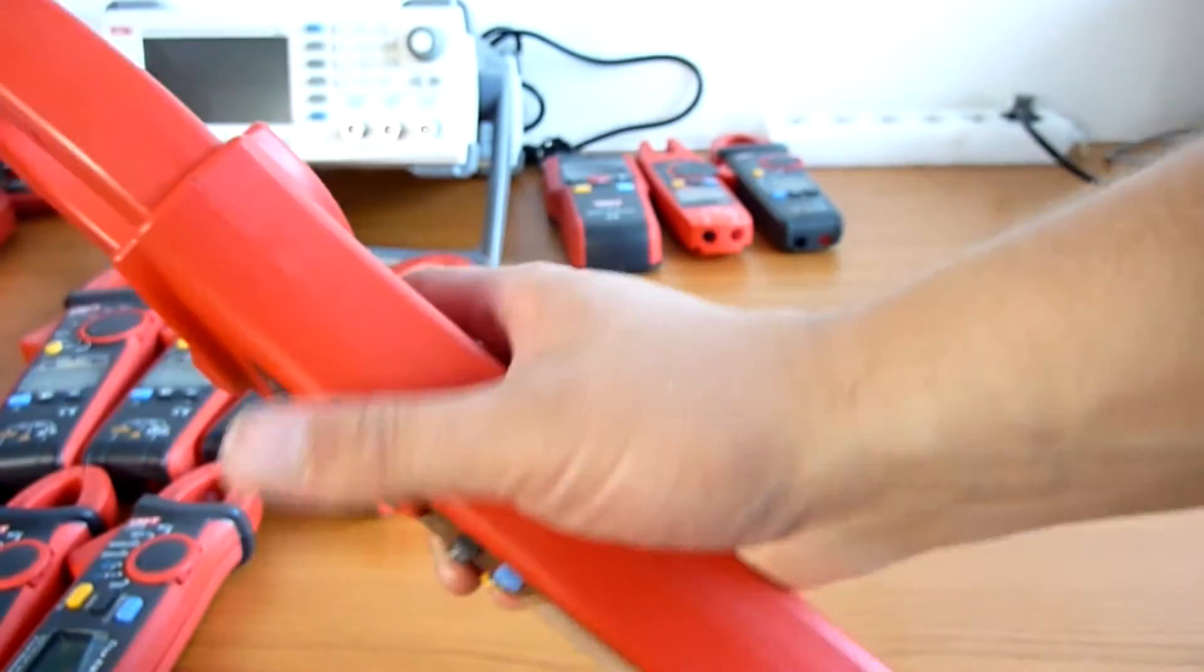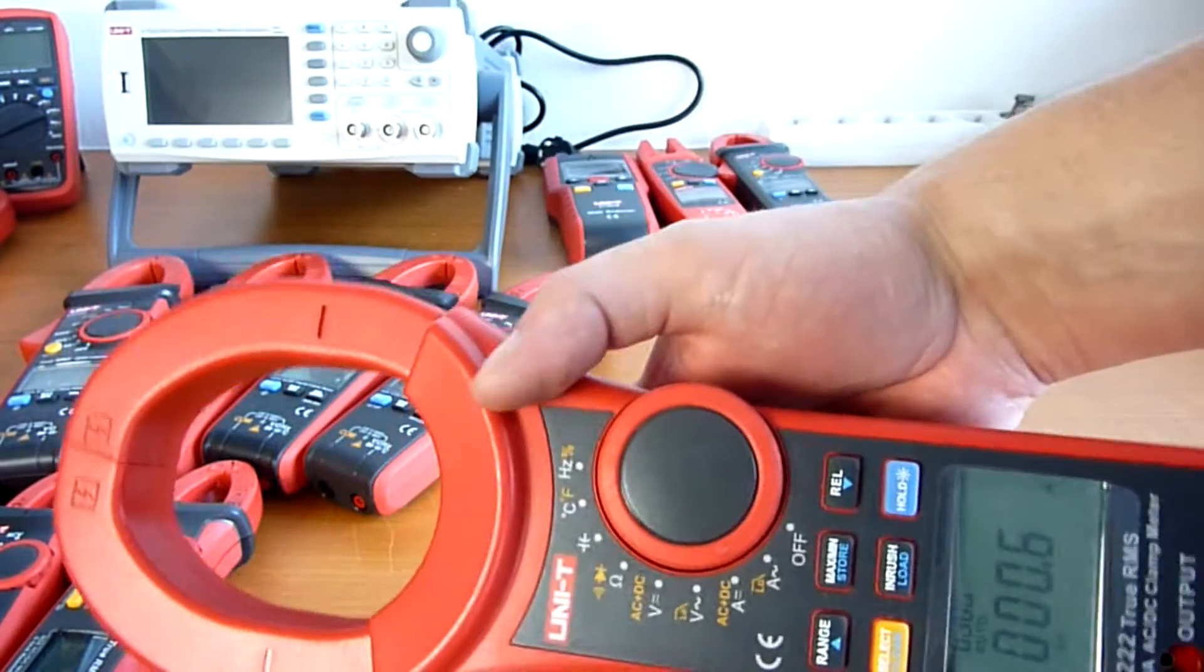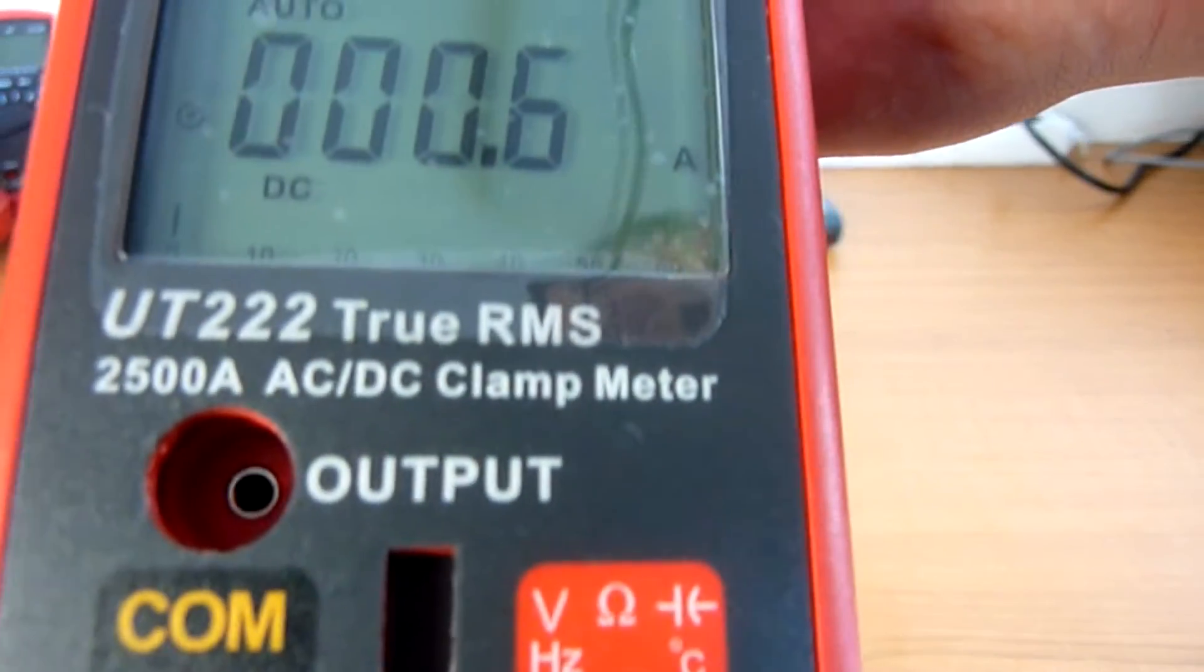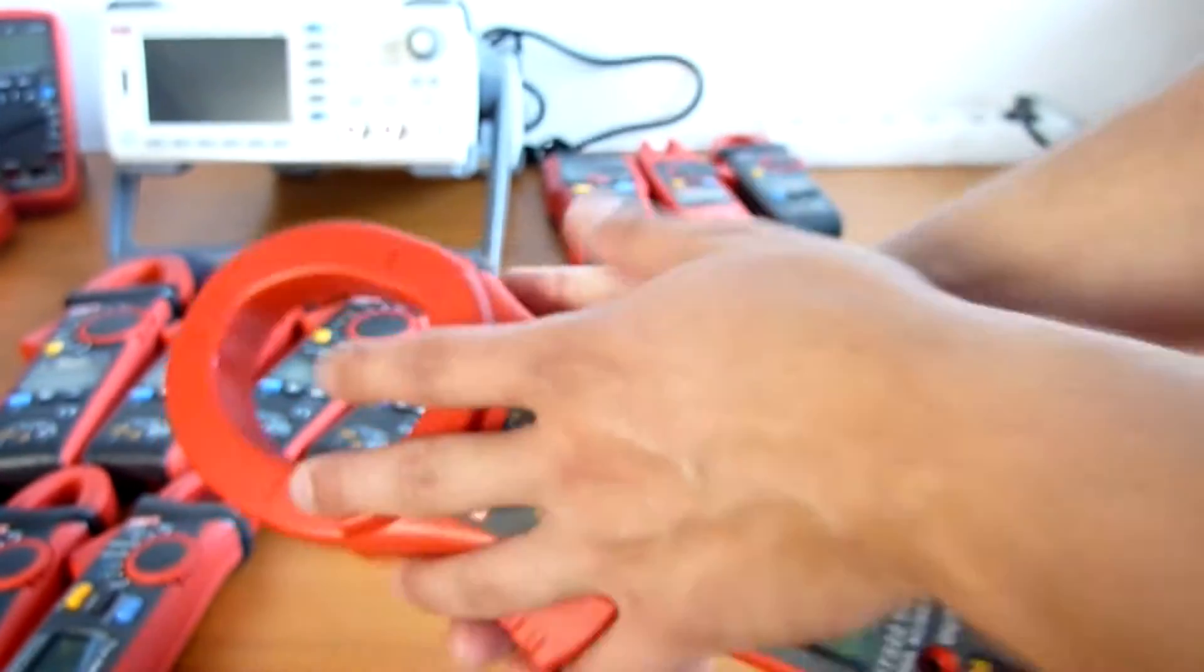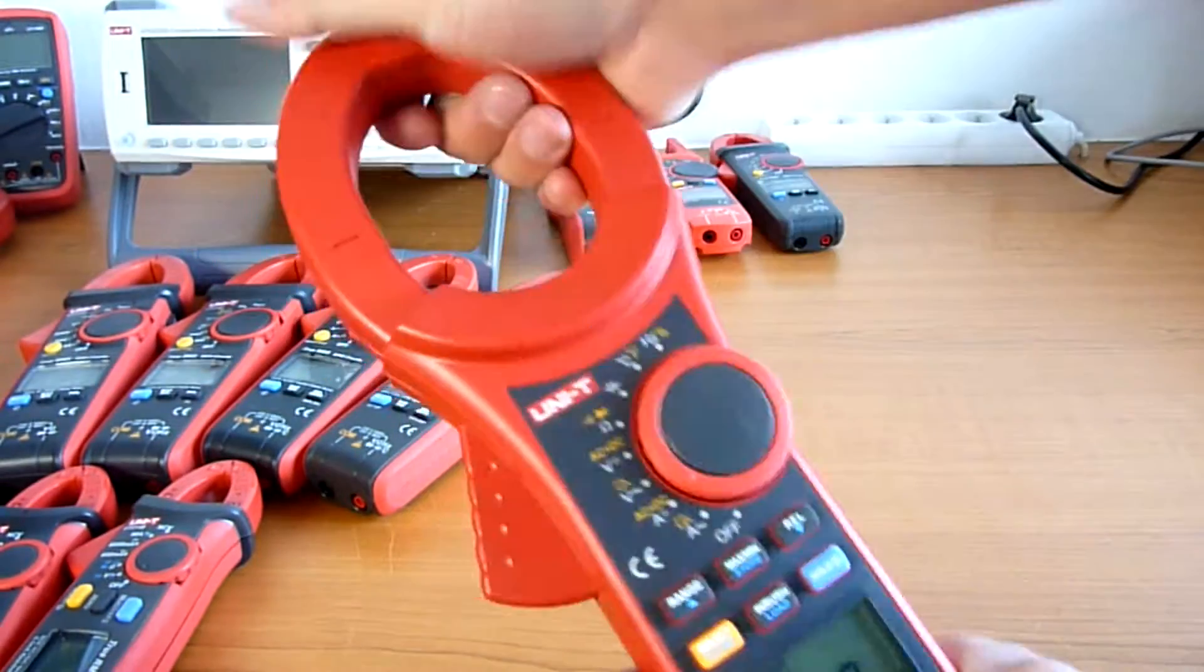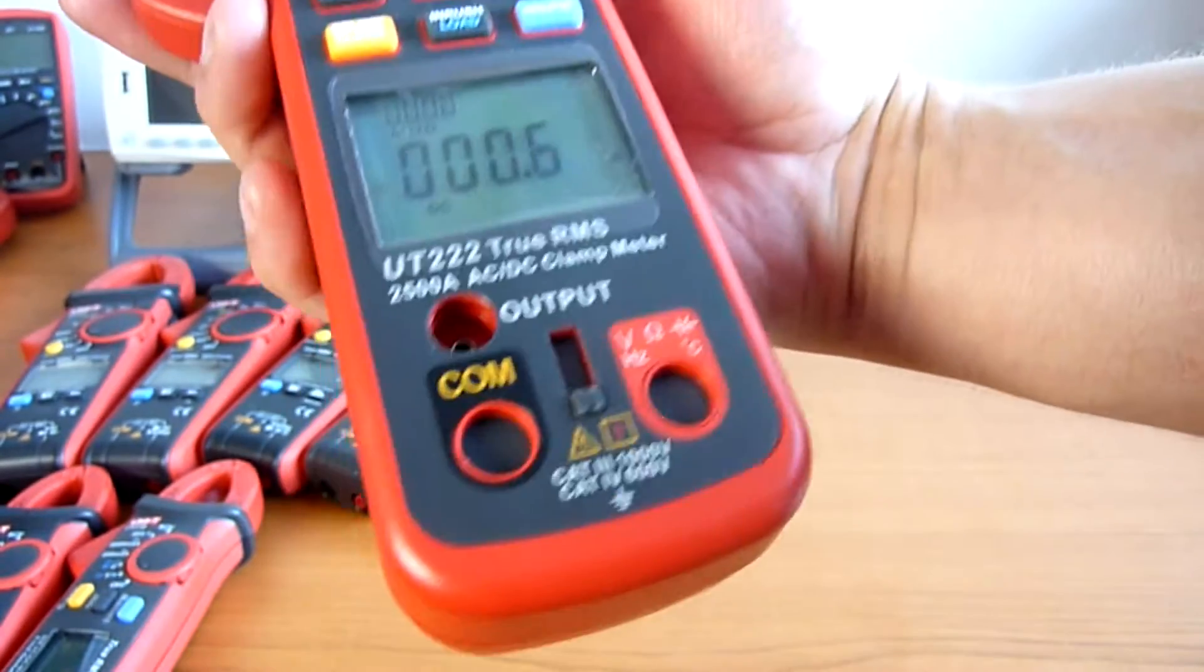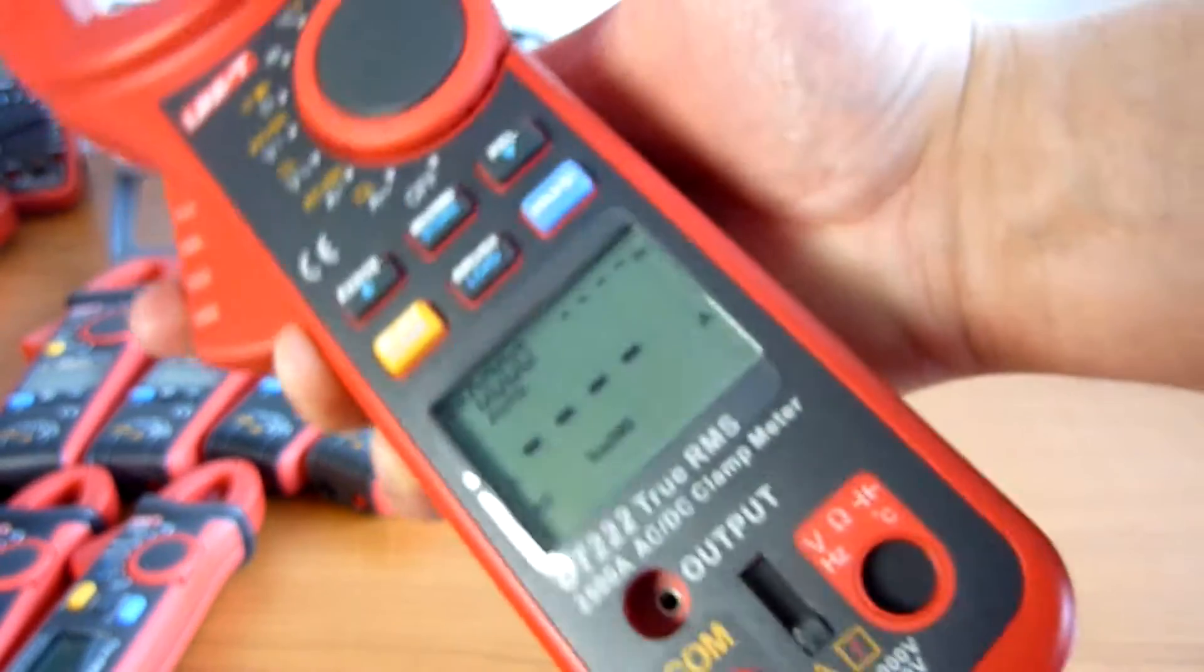This is making it a professional true RMS high current clamp meter for electricians and people who need to measure such high currents. It's beautiful. It's not so heavy, it's quite light and handy, yet it feels very solid. UT-222, true RMS AC-DC clamp meter for professional use.